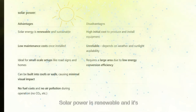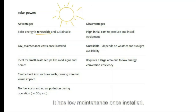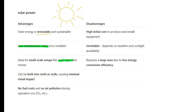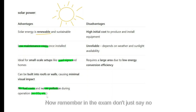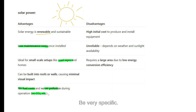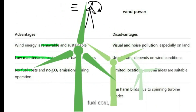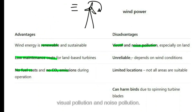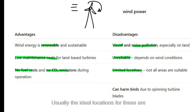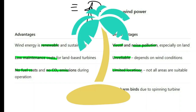Solar power advantages: renewable and sustainable, low maintenance once installed, ideal for small-scale setups like road signs, can be integrated into roofs or walls, minimal visual impact, no fuel cost, and no carbon dioxide emissions during operation. Disadvantages: high initial cost, not reliable as it depends on sunlight, and requires a large area due to low efficiency. In the exam, be specific — say 'no CO2' rather than just 'no pollution'.